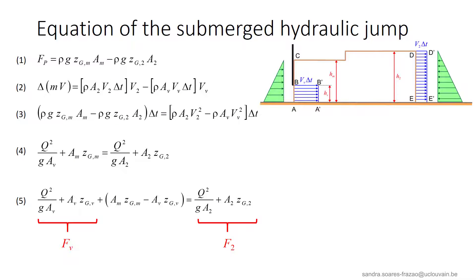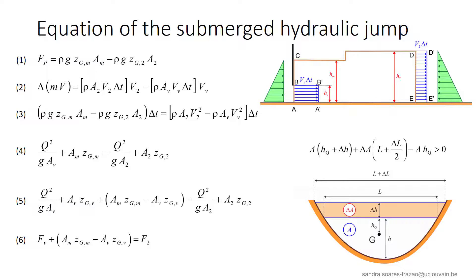Indeed, equation 4 can be written as equation 5, in which we have the specific force FV at the section AB of the gate, and the specific force F2 at the downstream side ED of the jump. So we finally write equation 6.